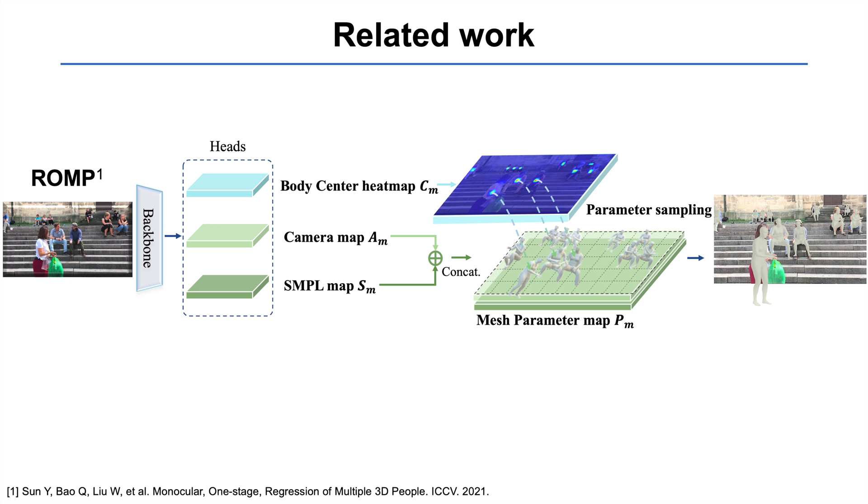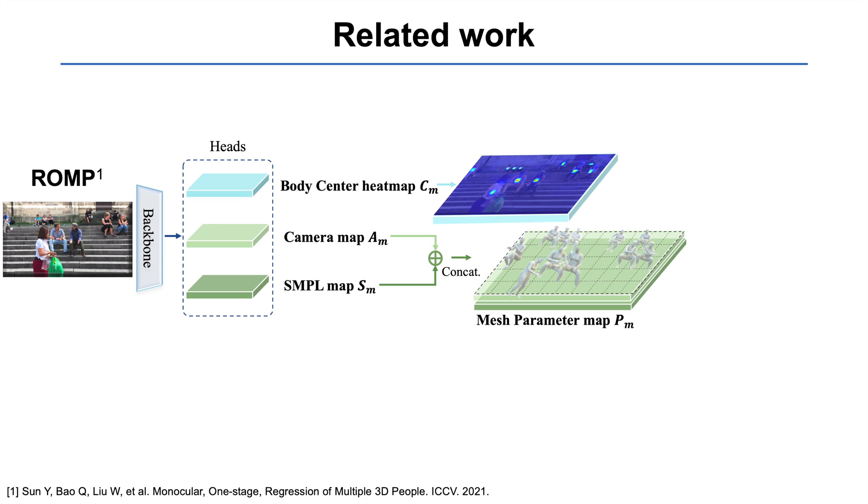The most related methods are ROMP and CRMH. ROMP is a one-stage method for monocular regression of multiple 3D people. Given a single RGB image, ROMP estimates three maps: a body center heat map for 2D human detection, a camera map for positioning, and a mesh parameter map containing SMPL body model parameters.